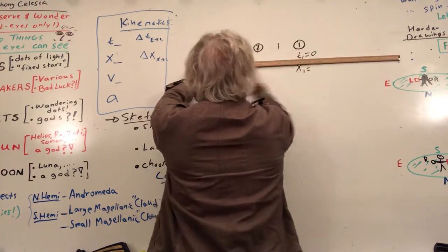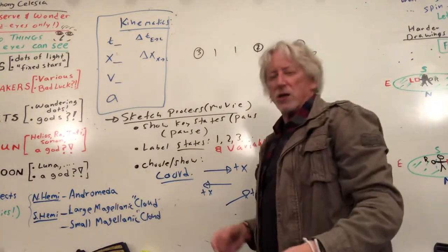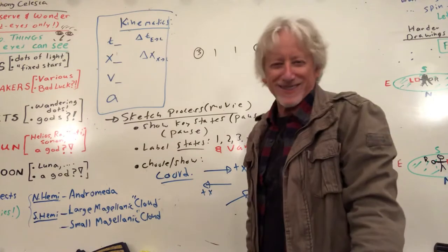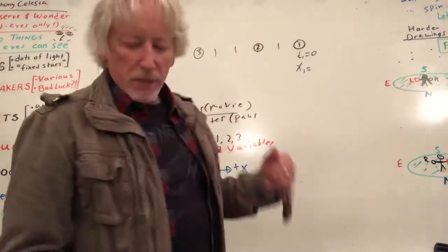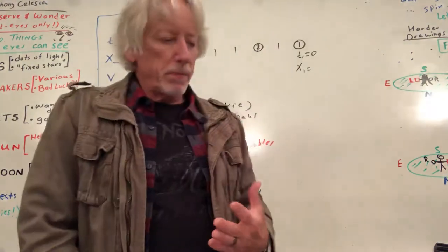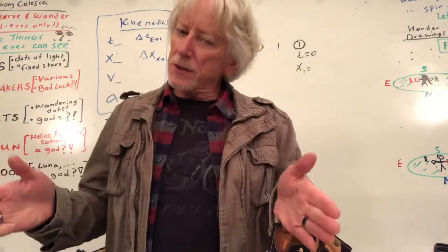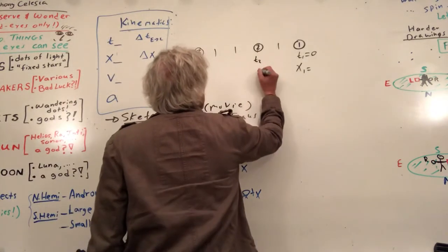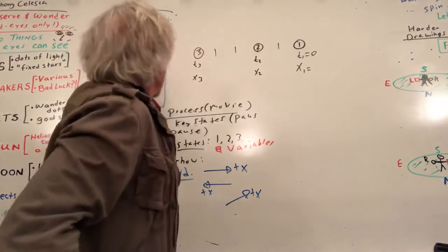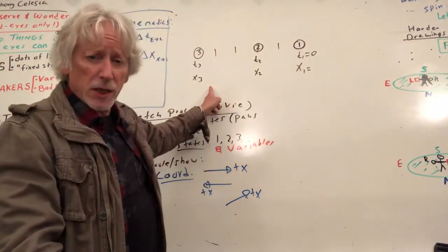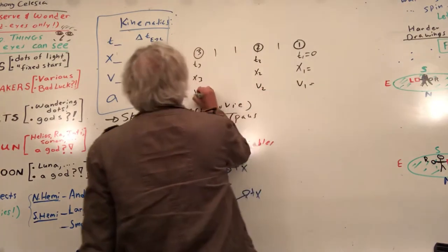It doesn't matter which origin you choose. If someone is walking and you change the coordinate system on them, they don't care — it's just your way of keeping track. Position is not really a physical number — you get to choose. But displacement is physical. So I'll write t2, x2, t3, x3 — times, positions, and changes in position between earlier and later states — and velocities v1, v2, v3.